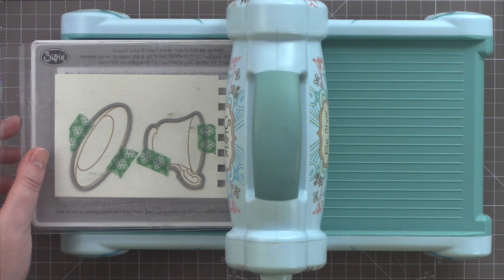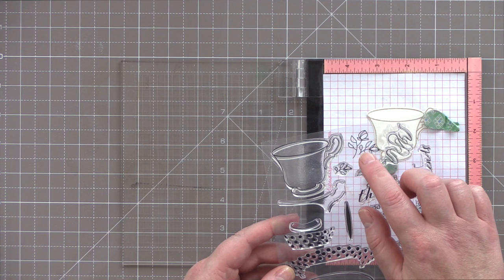I've then lined up the matching dies and kept those in place with washi before running it through the Big Shot machine to die cut.